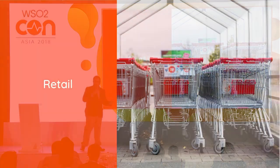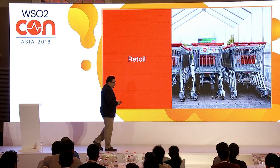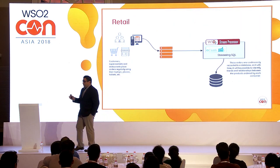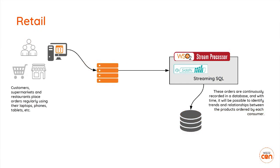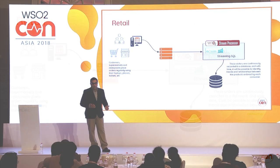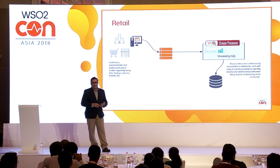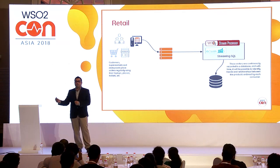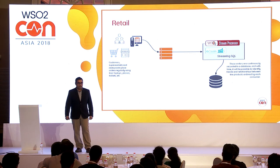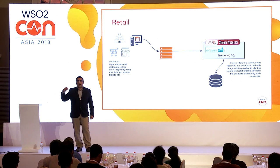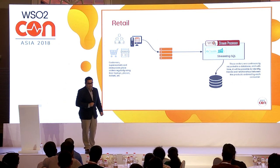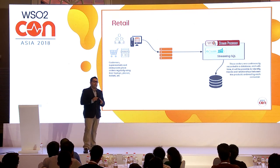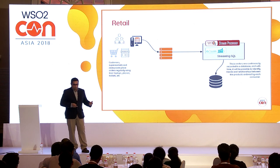Let's look at the first example — the retail business. We have one customer who is in the food services business. They have a website where customers can purchase goods and place orders. Their customers could be individuals, restaurants, or supermarkets, using multiple devices to place orders. These orders come in and are fed into the stream processor. Certain rules are defined using streaming SQL, which runs silently and identifies certain patterns in the orders placed.